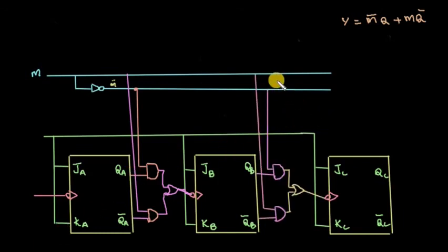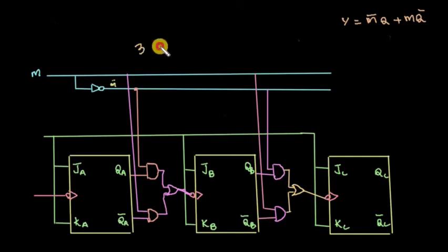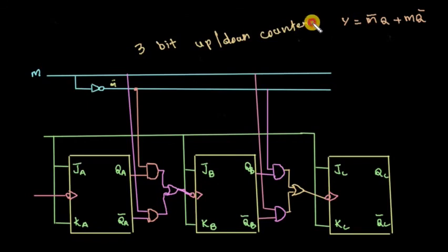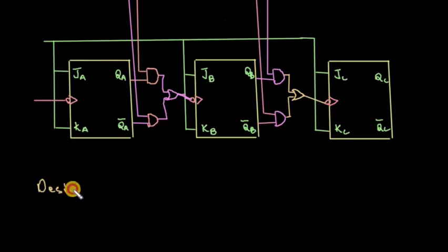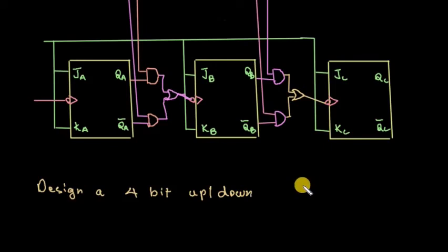Both up counting and down counting are possible based on the mode control bit. This completes the 3-bit up or down counter. As an exercise, design a 4-bit up or down asynchronous ripple counter.